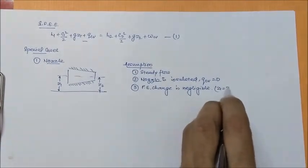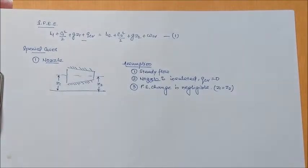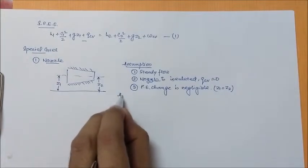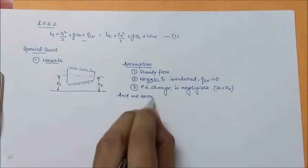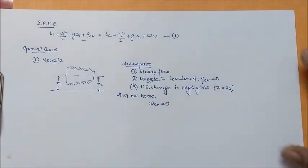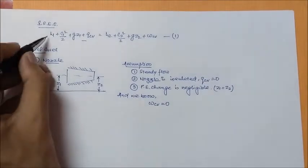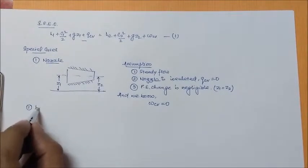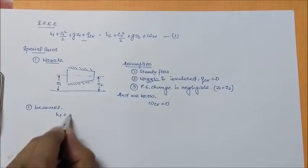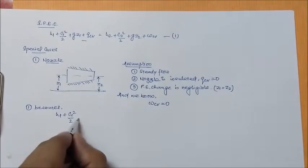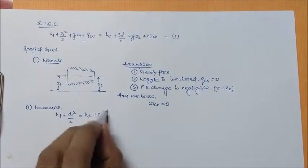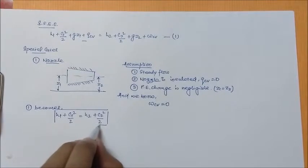Second: the nozzle is insulated, which means Q_CV is zero. Third: potential energy change is negligible, which means Z1 is approximately equal to Z2. We also know W_CV is zero for a nozzle. So equation 1 becomes H1 plus C1 squared by 2 equal to H2 plus C2 squared by 2.